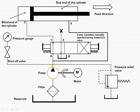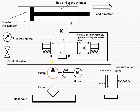When the spool of the four-way direction control valve is in the left envelope mode, the fluid flows from reservoir to filter, filter to pump, pump to port P, P to port 1, then to port 3 and 4, entering the blind end of the cylinder and causing the piston rod to move in the forward direction. Apart from the pump flow, the fluid from the rod end of the cylinder is also added to this flow.